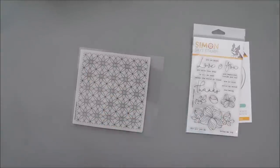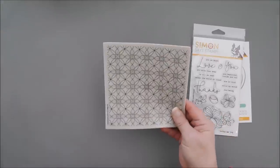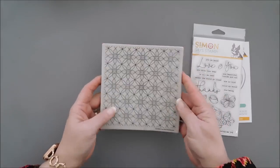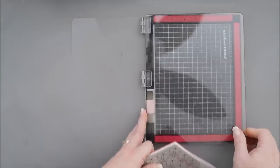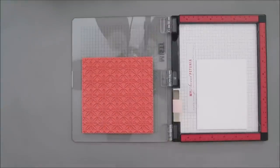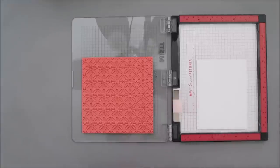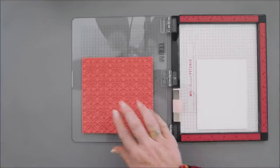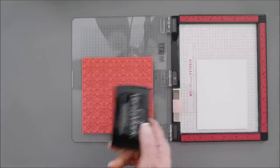I'm going to heat emboss with white embossing powder, and then we'll do a little bit of ink blending on our stamp today. I'm going to use my Versamark ink pad and go over my background. And actually, you know what?